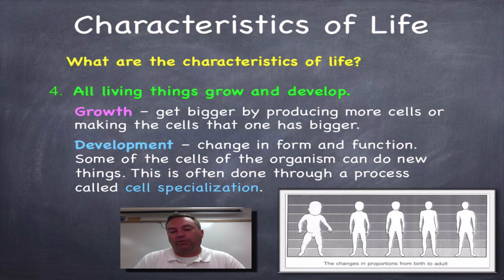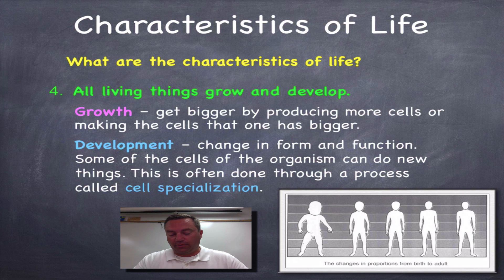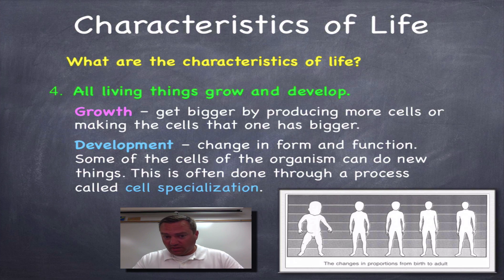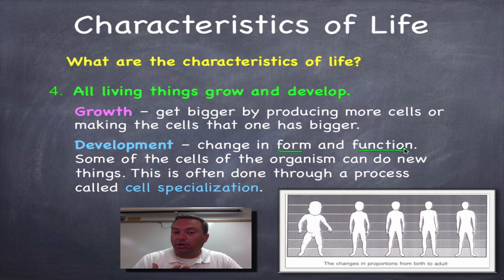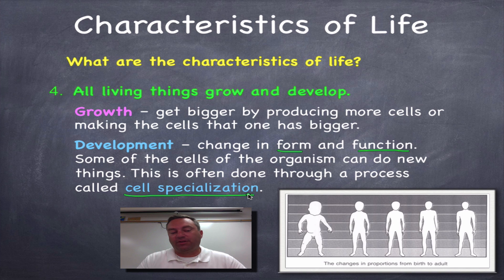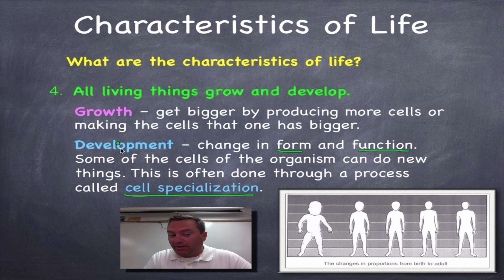The fourth characteristic: all living things grow and develop. Growth simply means getting bigger — either by producing more cells, which is what happens during adolescence, or by making existing cells larger. Development is a change in form and function. Body parts change and may develop new functions or lose old ones. This involves continued cell specialization, where cells that weren't very active prior to puberty get kicked into action and begin showing their specialized function.